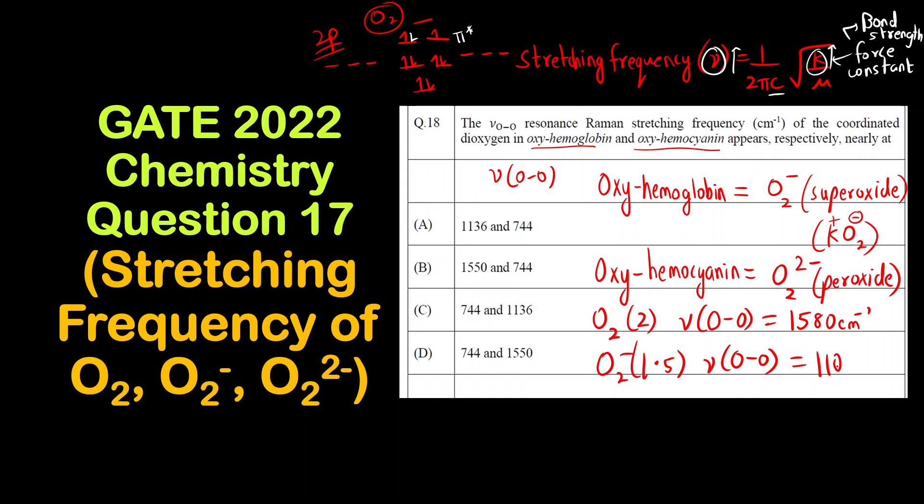For this it is around 1100 cm⁻¹, and for O2²- that means we are adding one more electron in the anti-bonding π*, so the bond order will decrease even more. This will be around 800. Approximate values you can remember: 1100 and 800.